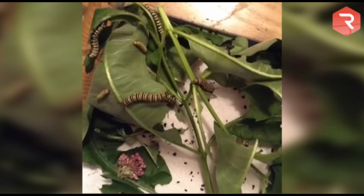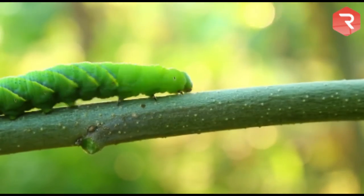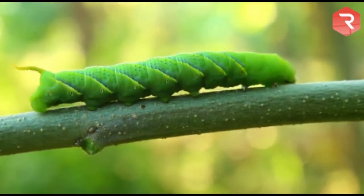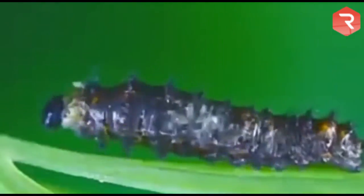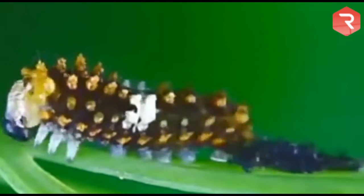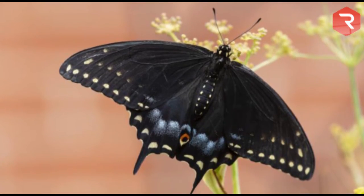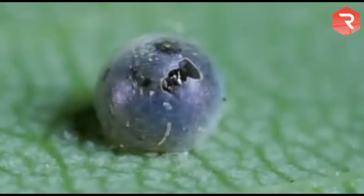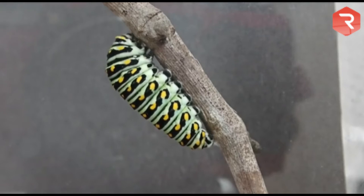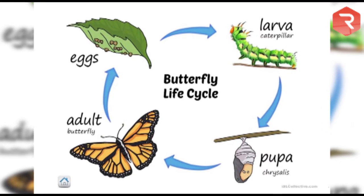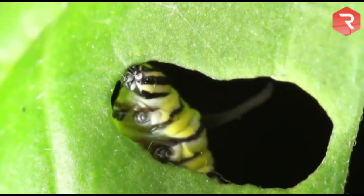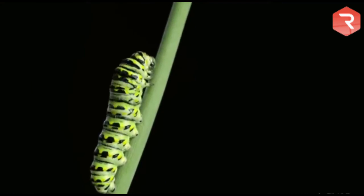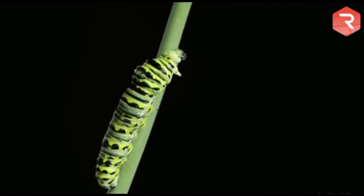The caterpillar is built to be an eating machine and will increase its body mass thousands of times before pupating. Caterpillars will molt multiple times as their exoskeleton wears out, sometimes changing their look quite dramatically. Black swallowtails, for example, have five different stages between hatching and pupation. The total time a butterfly stays in the caterpillar stage is about two to five weeks, varying by species and growing conditions.